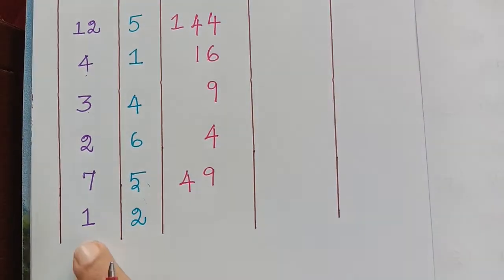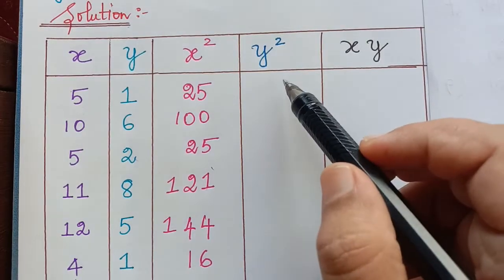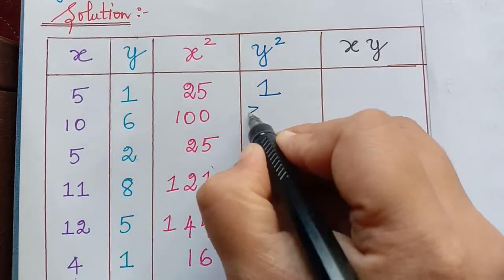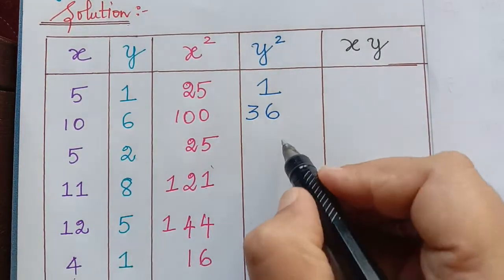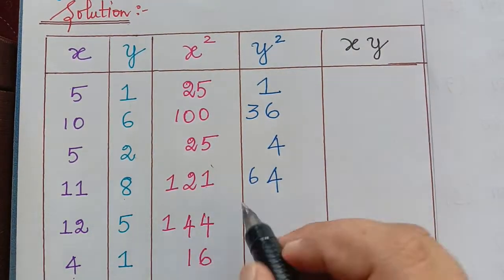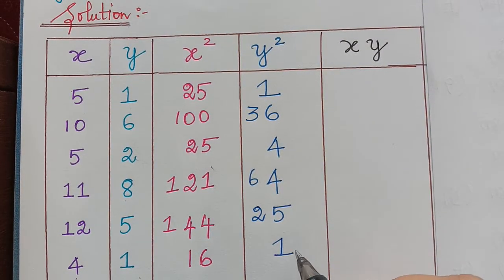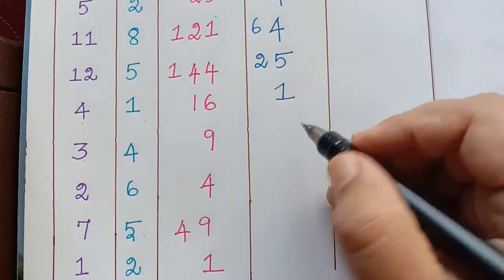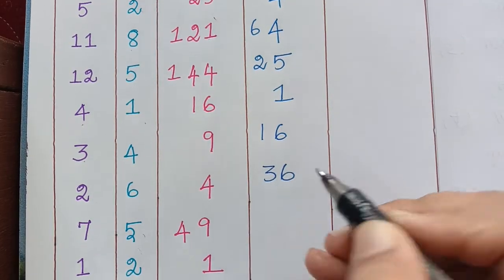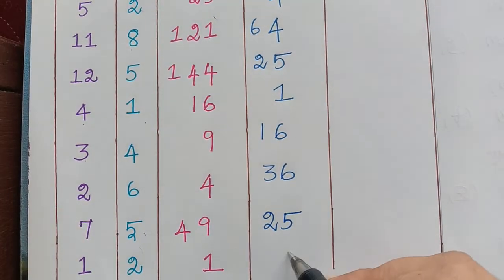Continuing X squared: 4 squared is 16, 3 squared is 9, 2 squared is 4, 7 squared is 49, 1 squared is 1. Next, we find Y squared. The Y values are 1, 6, 2, 8, 5, 1, 4, 6, 5, 2. So: 1 squared is 1, 6 squared is 36, 2 squared is 4, 8 squared is 64, 5 squared is 25, 1 squared is 1, 4 squared is 16, 6 squared is 36, 5 squared is 25, 2 squared is 4.